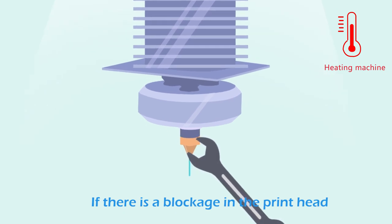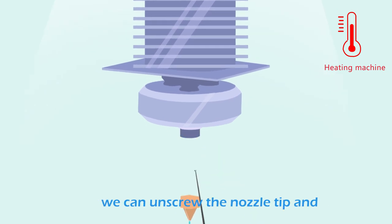If there is a blockage in the printhead, we can unscrew the nozzle tip and use a small thimble to repeatedly clean the inner wall of the printhead. Change a new one.